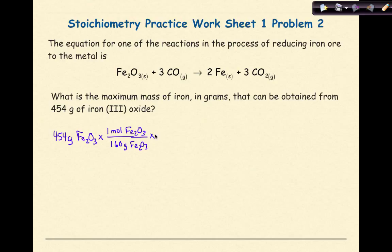Then we're going to go to the next step. Now we don't want to be in moles of Fe₂O₃, we actually want to be in grams of iron. So in order to make this transformation, we're going to do a mole to mole problem. Moles of Fe₂O₃ to moles of iron.